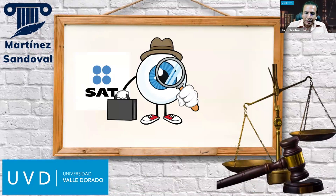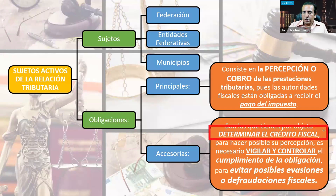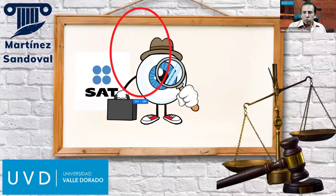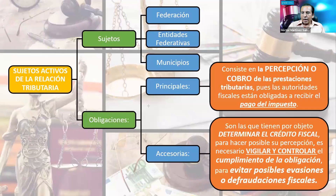Dentro de las obligaciones accesorias nos encontramos con la determinación del crédito fiscal, la vigilancia y control del cumplimiento de la obligación. Si una persona física o moral presenta su declaración, no porque la presente significa que cumplió; la autoridad verificará que tenga información cierta esa declaración para evitar la evasión o defraudación fiscal.